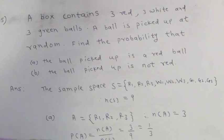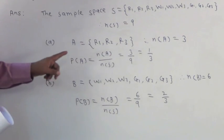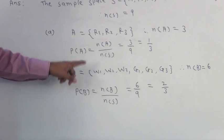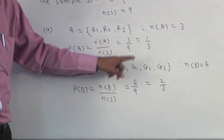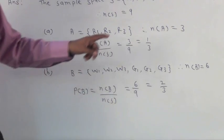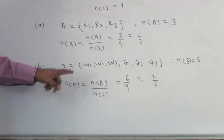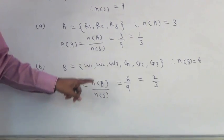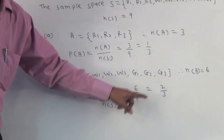Let B be the event that the ball picked up is not red. B is equal to W1, W2, W3, G1, G2, G3. Total number of sample points is equal to 6. Probability of event B is equal to N of B upon N of S is equal to 6 upon 9 is equal to 2 upon 3.